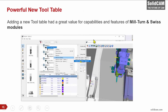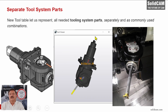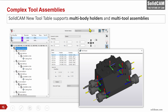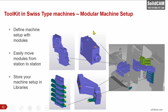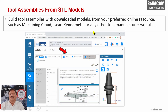Let me quickly recap some of the SolidCAM 2021 highlights. We have a powerful new tool table with great capabilities especially for mill-turn and Swiss modules. It enables you to generate all tooling system parts separately or as commonly used combinations, and we can build multi-body holders and multi-tool assemblies. We support Swiss-type tools best with the new tool table. You can build tool assemblies from STL models downloaded from Machining Cloud, ISCAR, KenaMetal, and others.